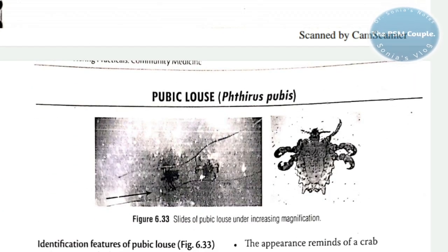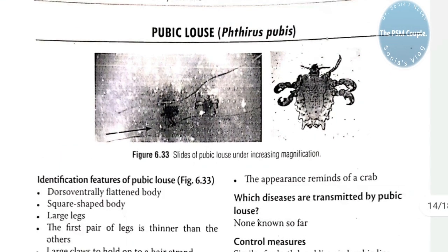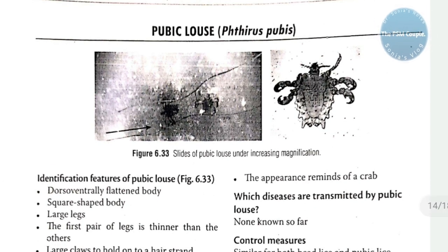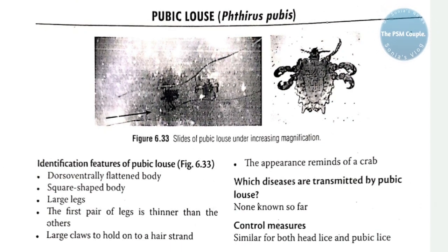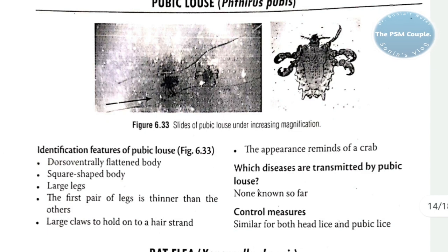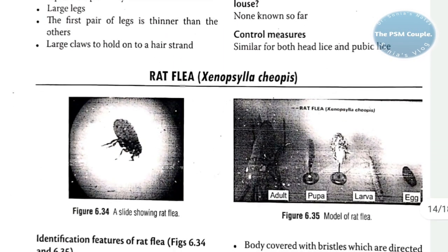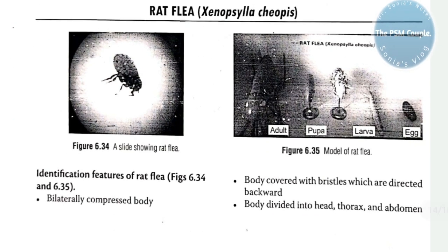Coming to pubic louse, Phthirus pubis: identification features are dorso-ventrally flattened, square-shaped body, large legs — the first pair of legs is thinner than the others — and large claws to hold on to a hair strand. Its appearance resembles that of a crab. No disease transmitted by pubic lice is known so far. Control measures are similar to those for head lice.